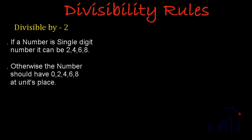First rule is if a number is a single digit number, it can be 2, 4, 6, and 8. All these are the single digit even numbers. I think this is very simple. We need not to talk much about this.